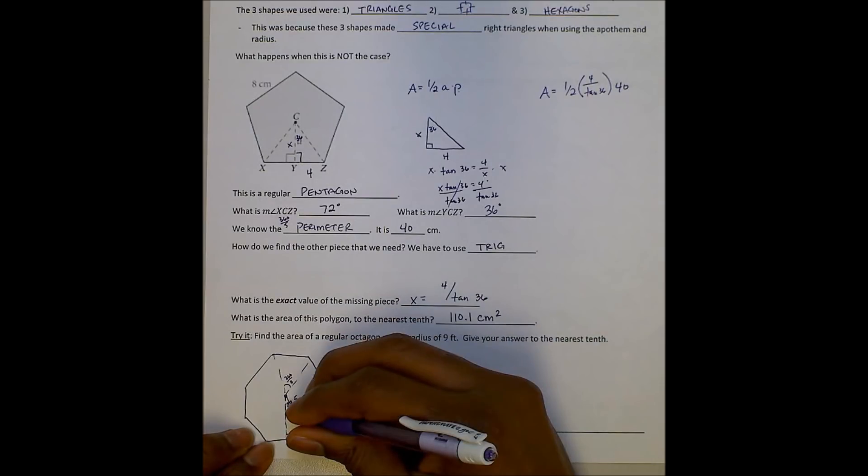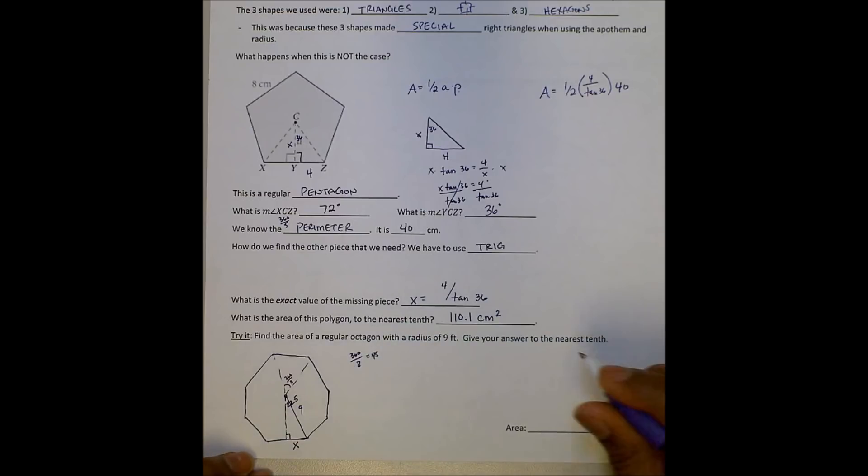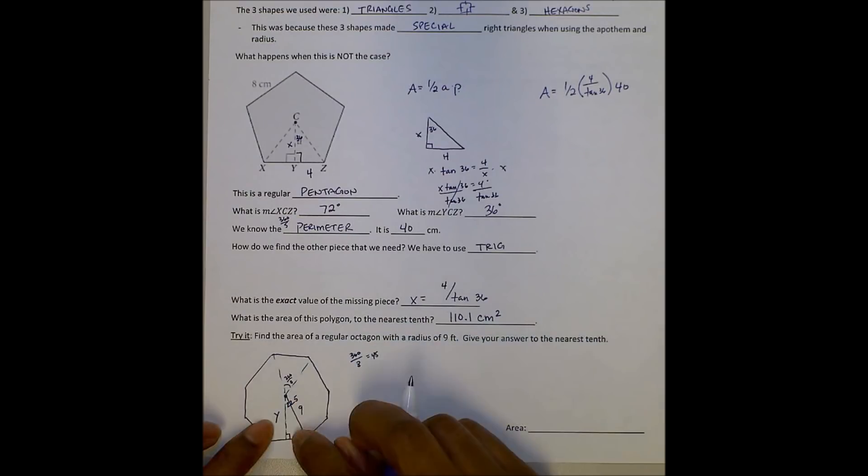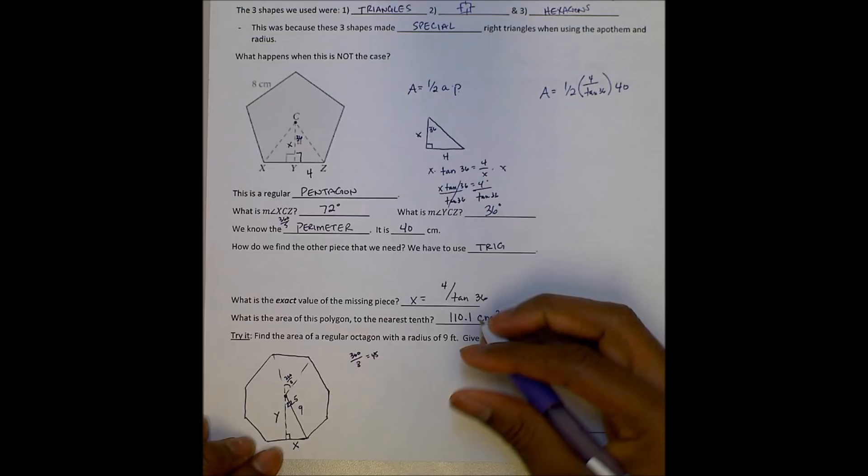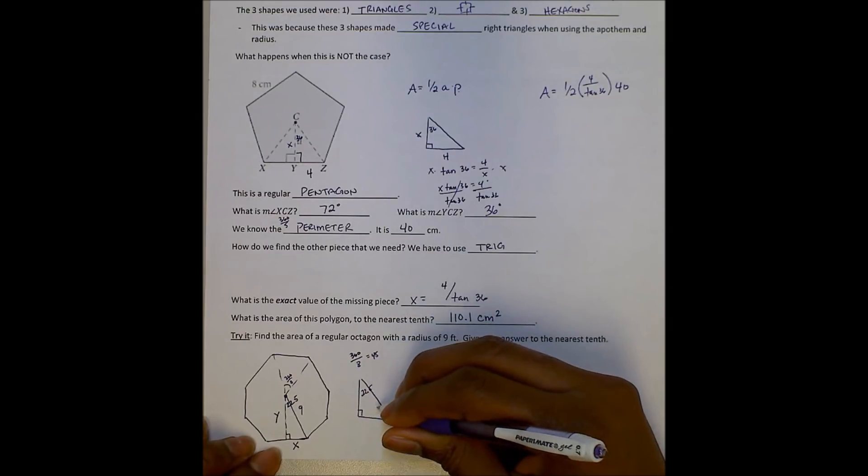So now I need to find this side and this side. I need to find my apothem, and I also need to find the side so I can find my perimeter. So I'm going to draw this triangle out just because I'm working with that for the most part. This is 22.5. This is 9.